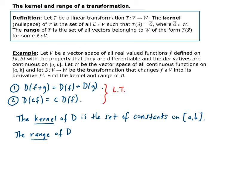Now for the range of D. In this example, D is the transformation from V to W, where V is the vector space of functions and the mapping from V to W is through the derivative. Since W is the vector space of all continuous functions defined on [A, B], the range of D is the set of all continuous functions defined on [A, B].